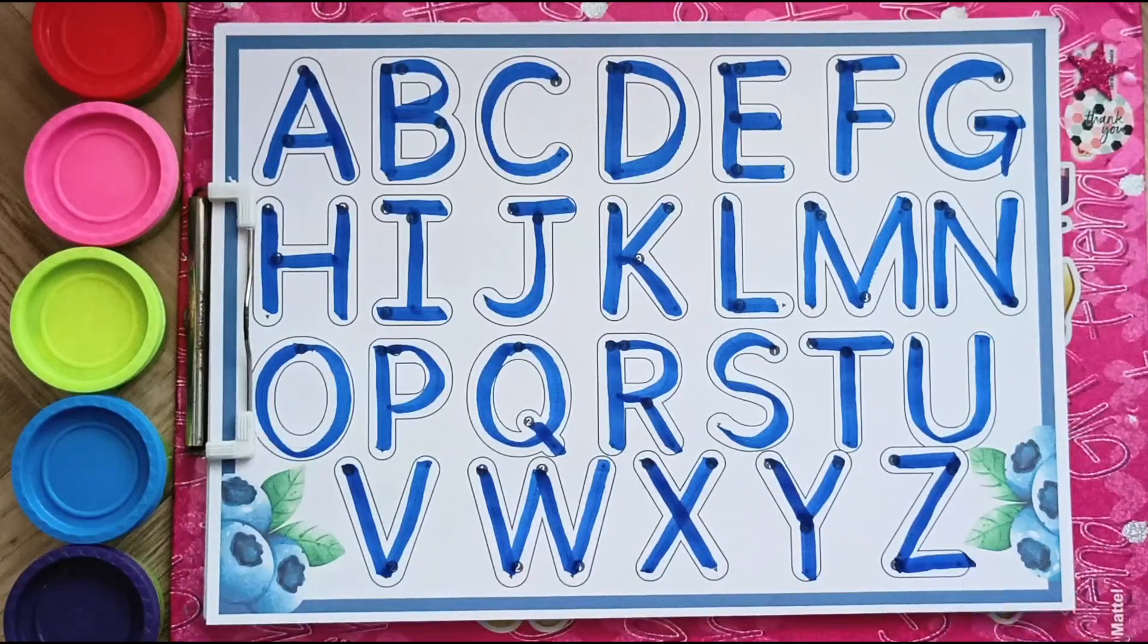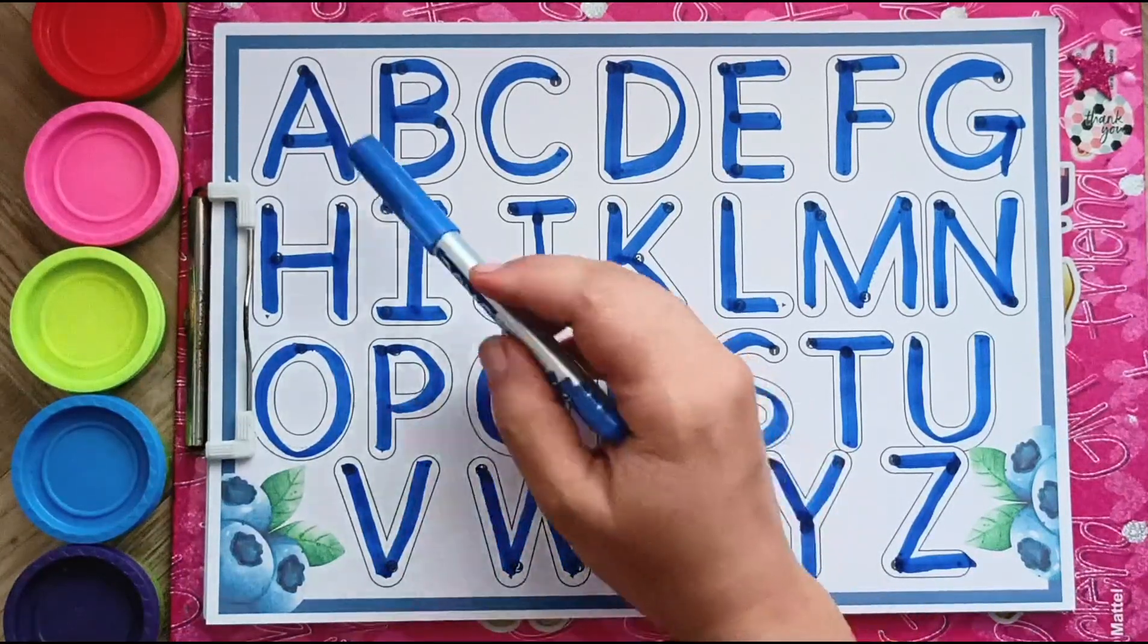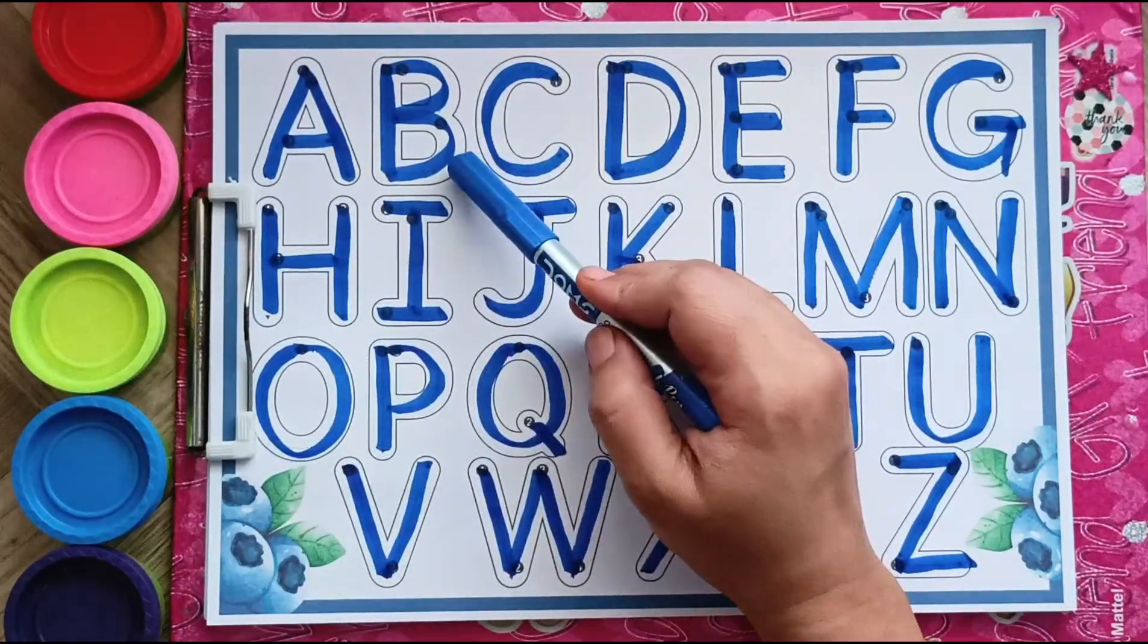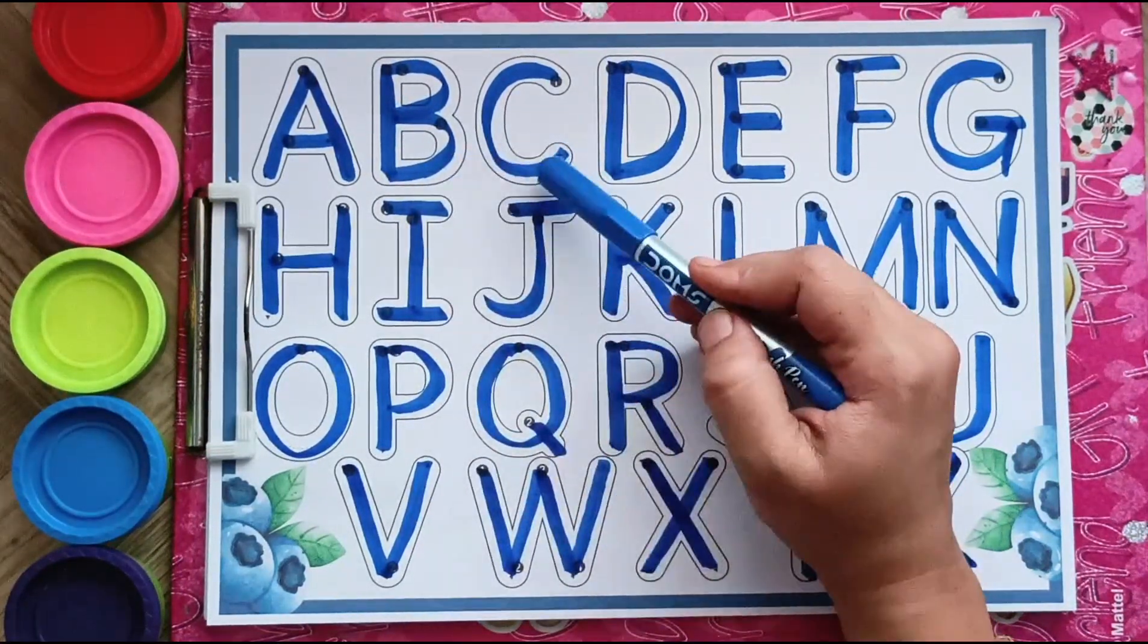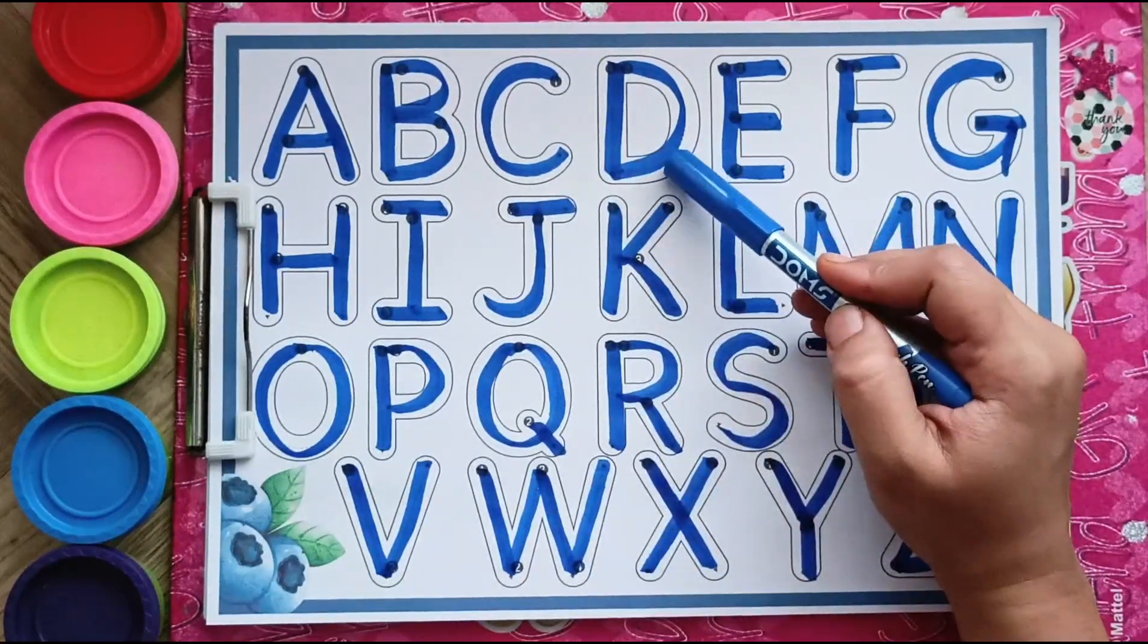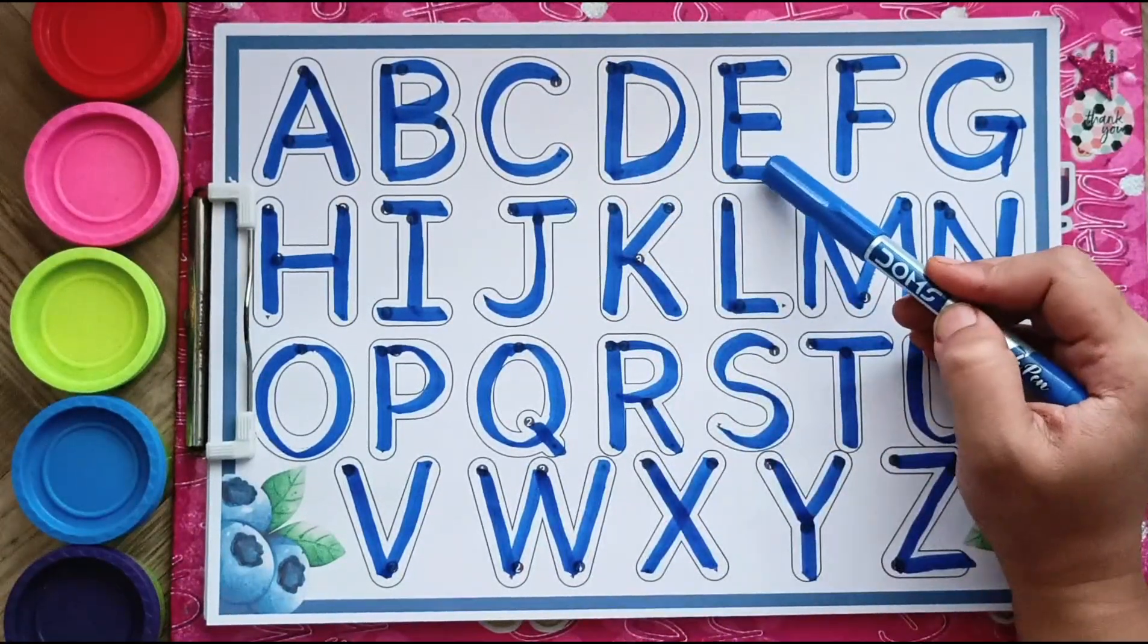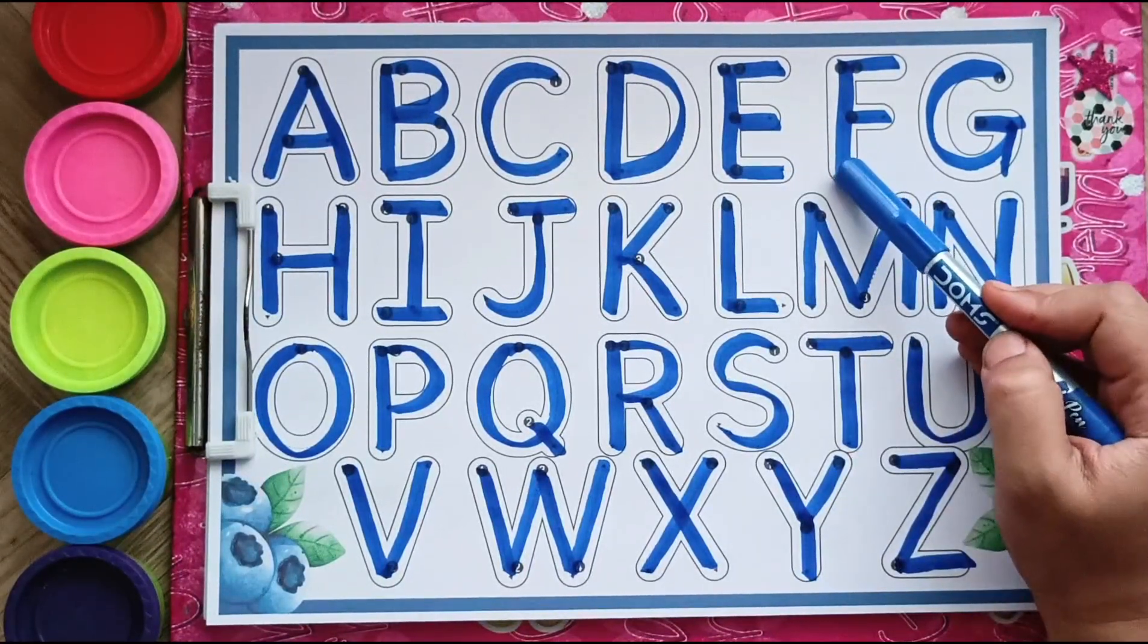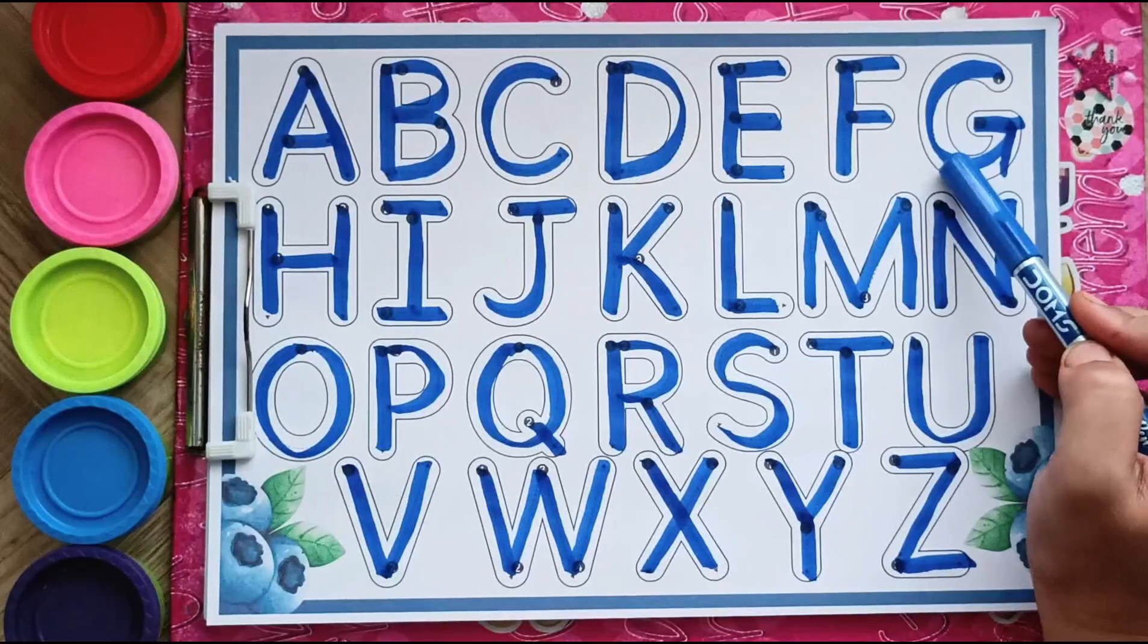Let us repeat it with the phonics. A, A, Apple. B, B, Ball. C, C, Cat. D, D, Dog. E, E, Egg. F, F, Fish. G, G, Goat.